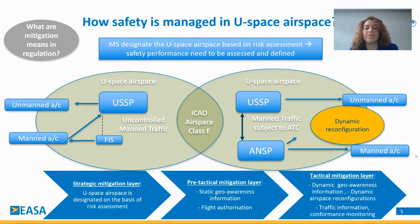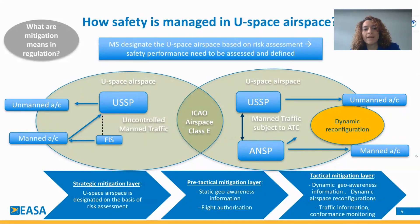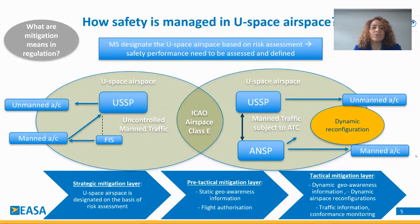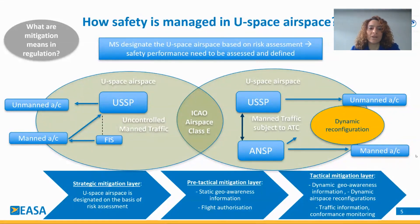When we have U-Space in uncontrolled airspace, on the left-hand side, we have a flight information service providing flight information to manned aircraft, and U-Space providing services to unmanned aircraft. What we have here is that the manned aircraft needs to be electronically conspicuous — they need to have an electronic conspicuity device, which colleagues will explain later.